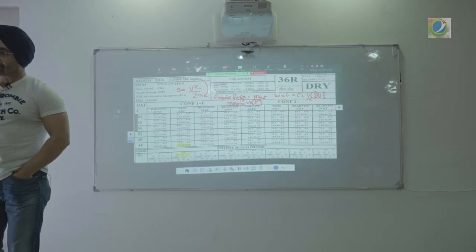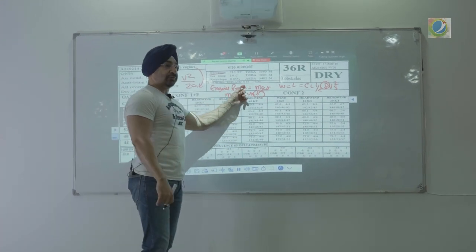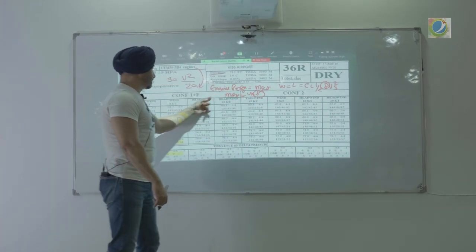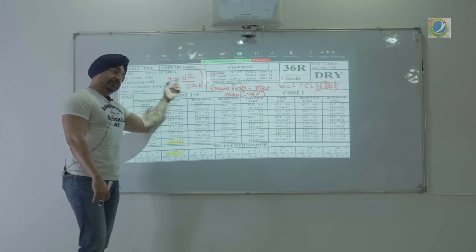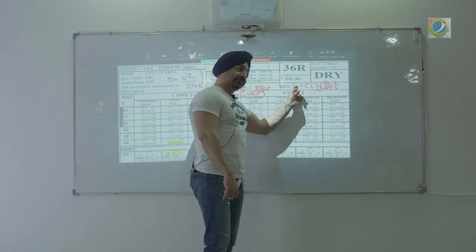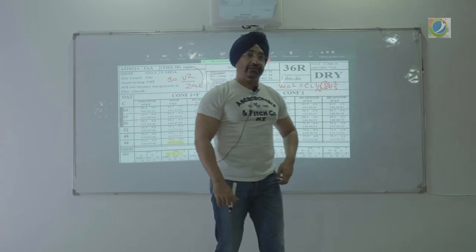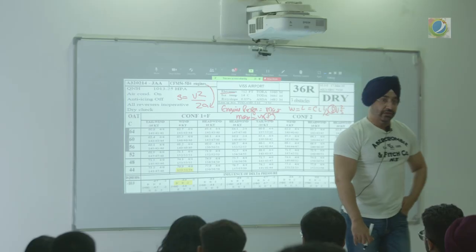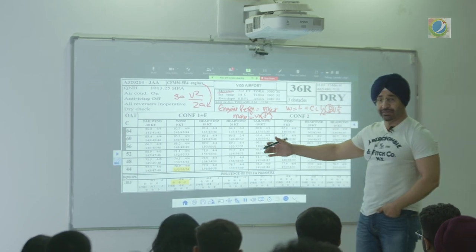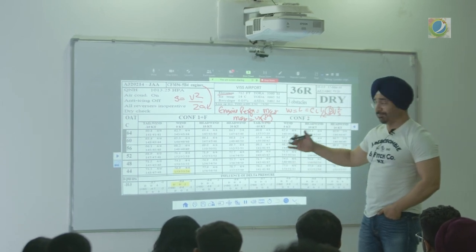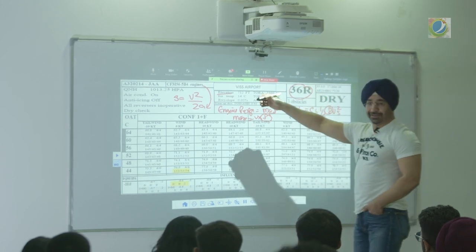With the same engine, if the density is less, the thrust produced will be less. If thrust is less, what happens to acceleration? Acceleration will reduce. And what about lift produced? That also changes. So all your parameters will change. The manufacturer gives you this in a very simple manner — it looks complicated but it is very simple. This is runway 36 for VISS airport.